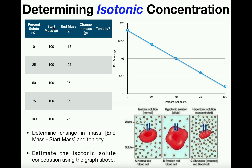In each case the egg has a certain start mass. Let's say in this case it's 100 grams. Then after we let osmosis occur we measure the mass of the egg at the end. So when we put the egg in a zero percent sugar solution it started with a mass of 100 grams and ended up being 115 grams. When we put a different egg, also starting at 100 grams, in a 25 percent sugar solution it ended up being 105 grams, and so on.